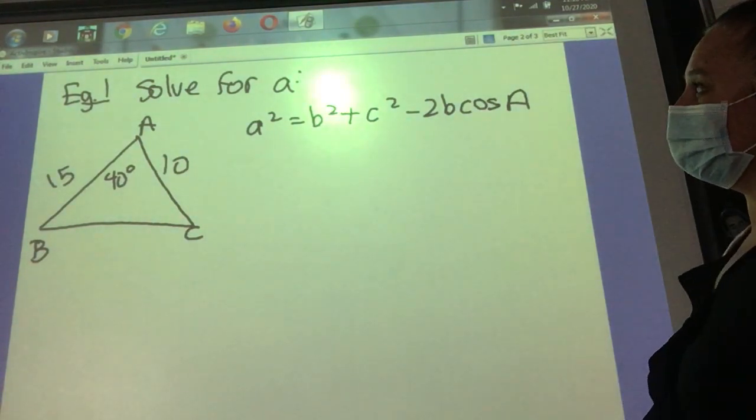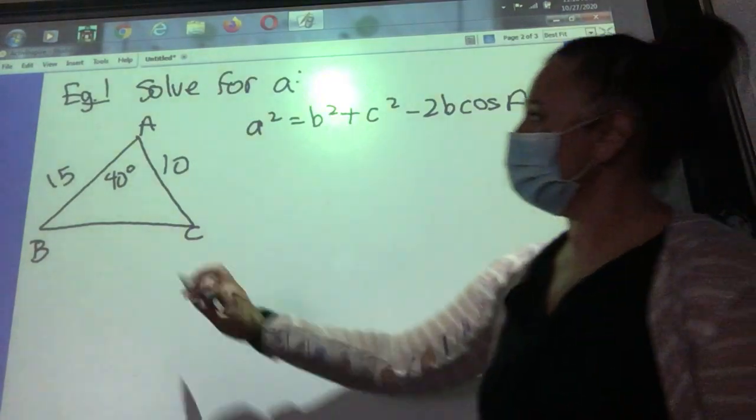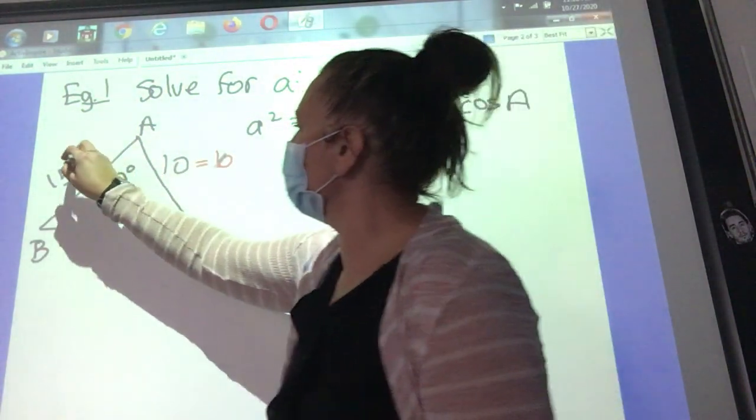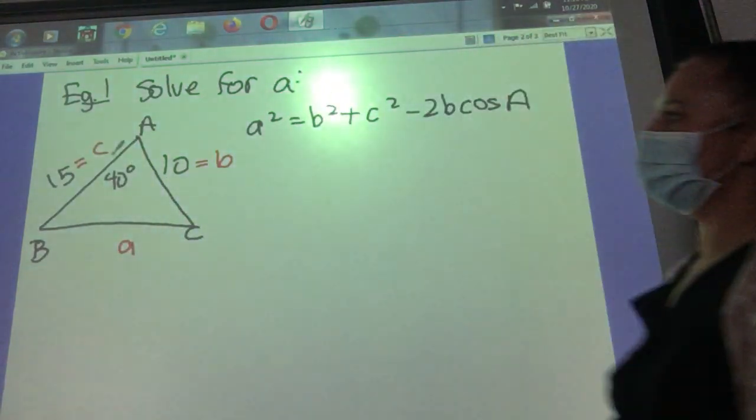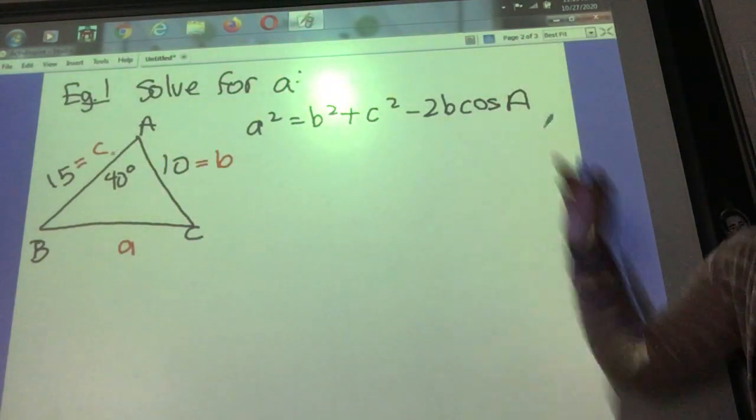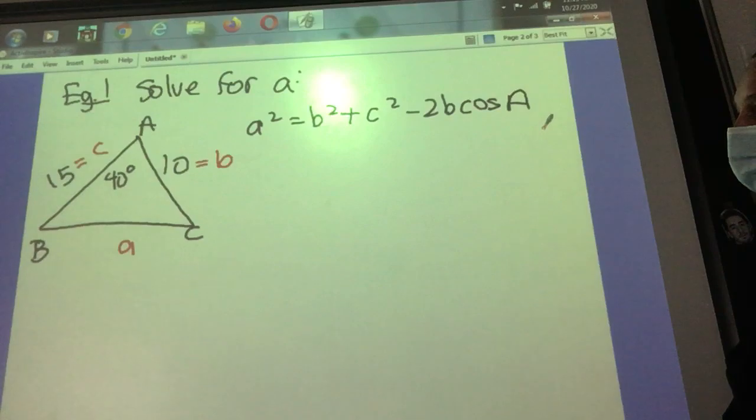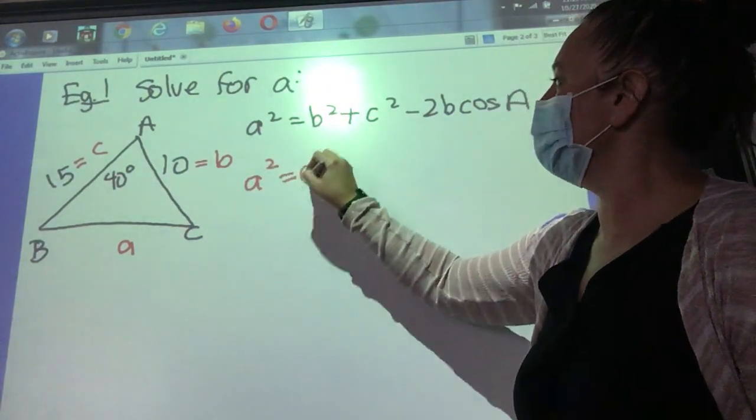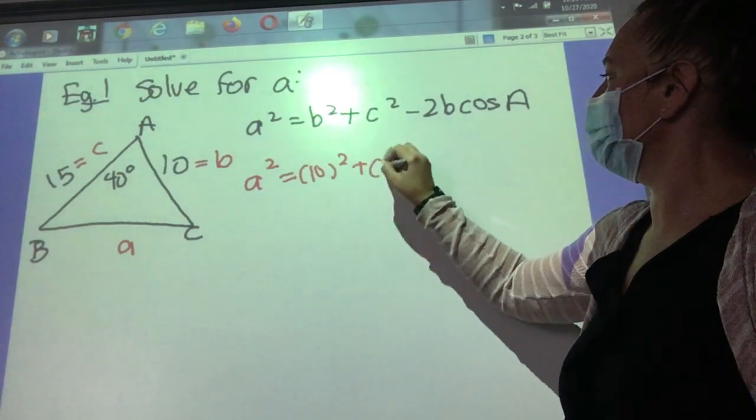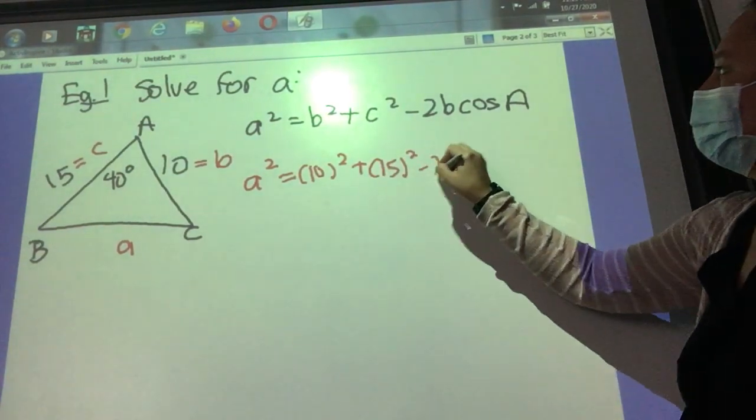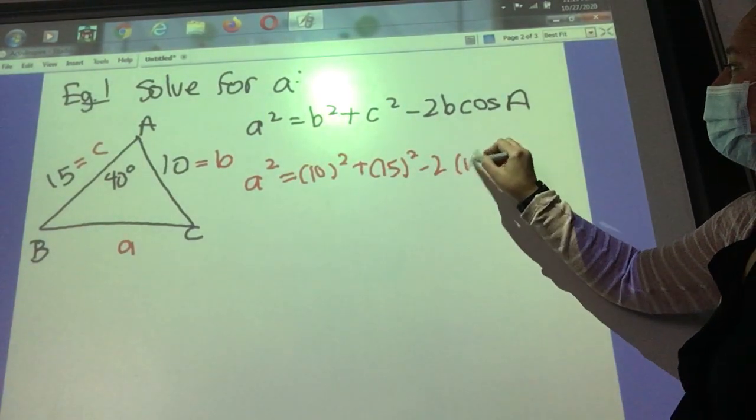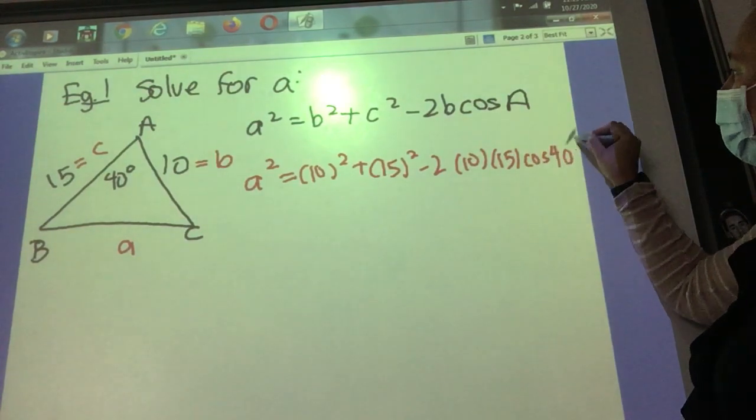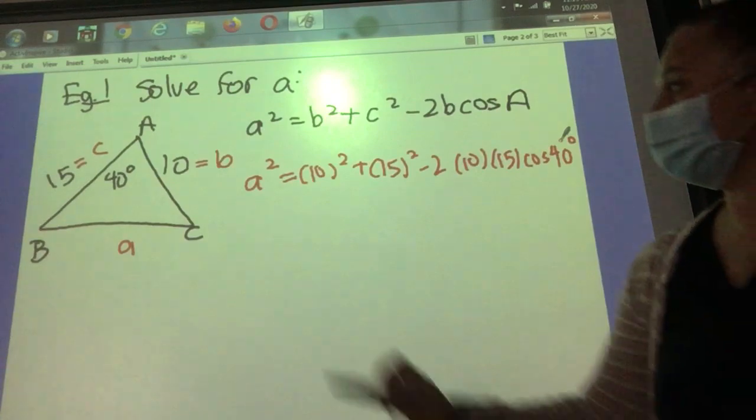So here we're solving for side A. So this is the side we're solving for. They give us side B, they give us side C, and they give us angle A. So we're using the version that is on your formula sheet. So we can just insert. We don't know what side A is, but we know side B is 10, side C is 15, 2 is minus 2, B is still 10, C is still 15. Oh, I'm going to run out of room. And the angle A is 40 degrees.